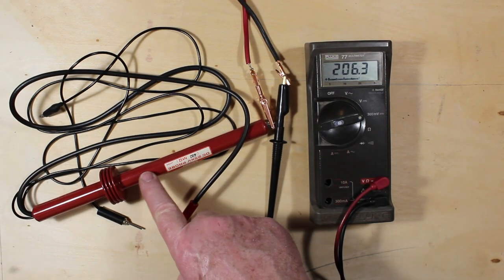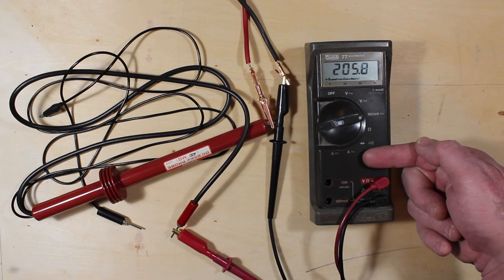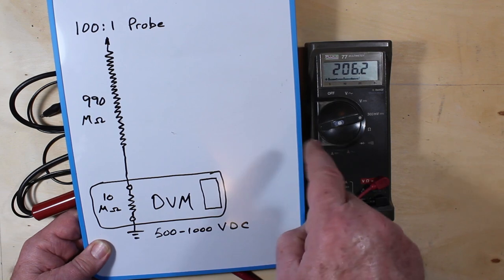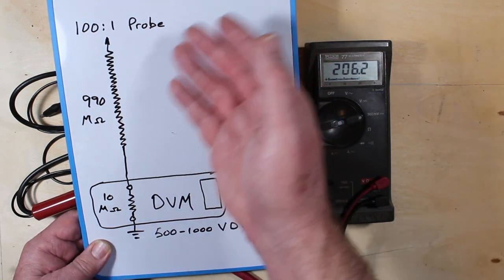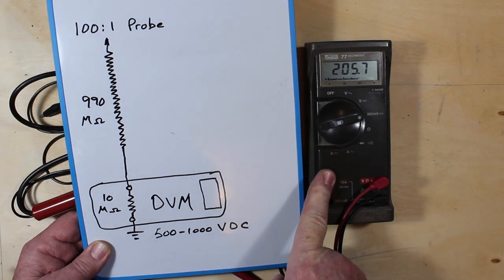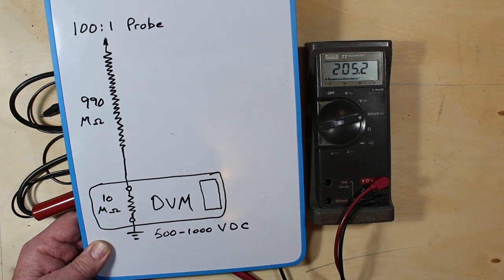So if you have a more modern high voltage probe that is designed to work on a 10 mega ohm input meter like this, this is most likely what the situation is going to be for you. You're probably going to have a 100 to 1 probe or some such, and because this is 10 mega ohm inputs, the probe itself is going to be 990 mega ohms across it.